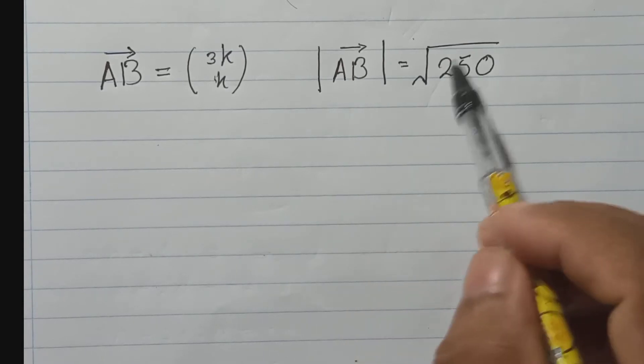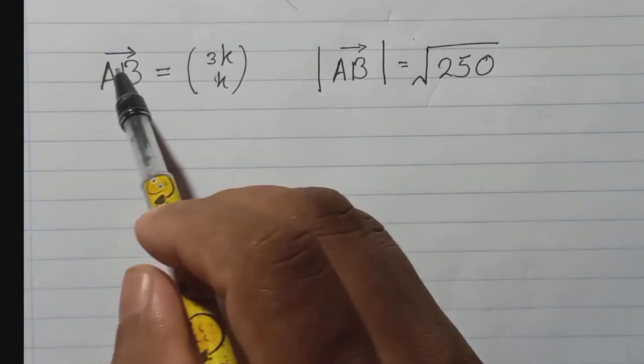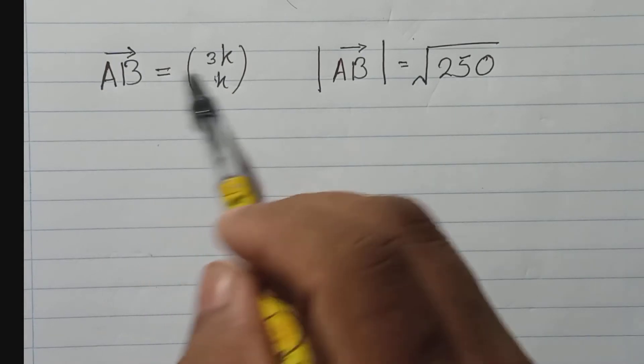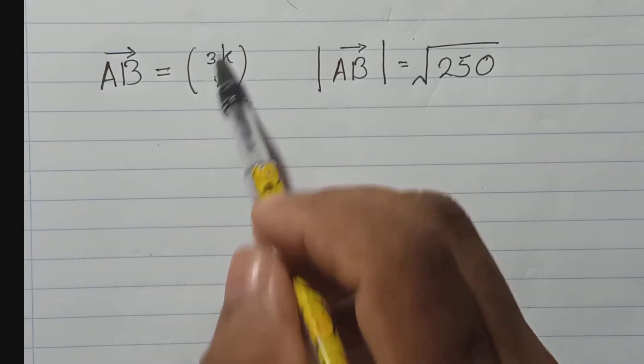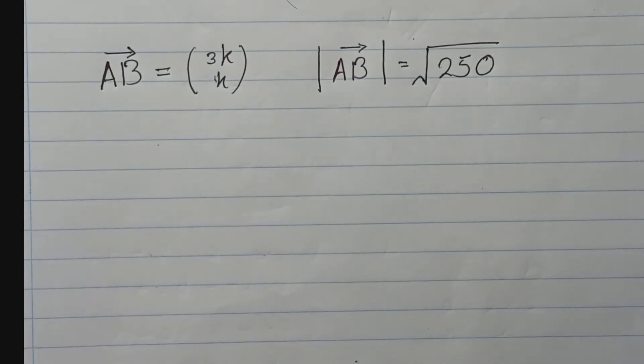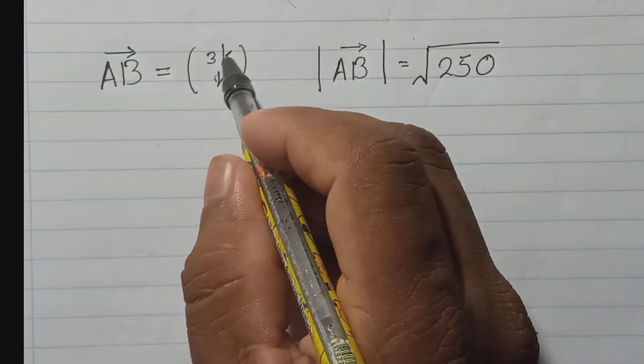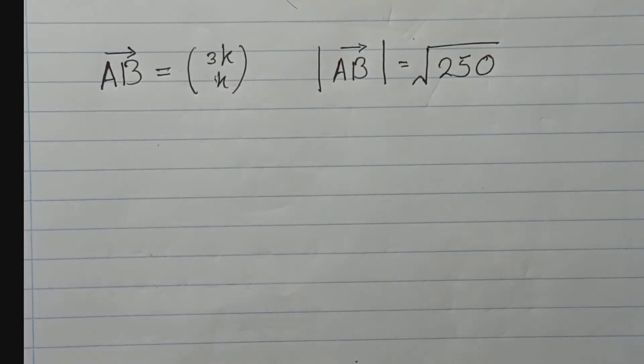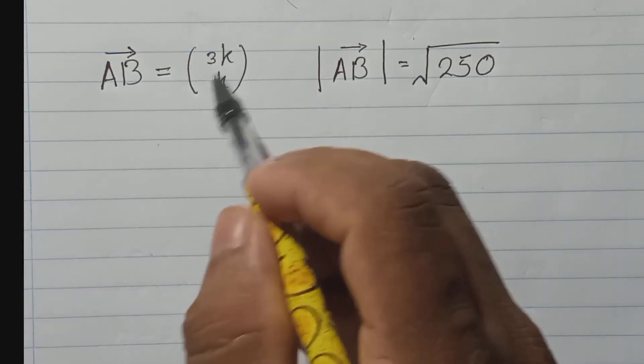When we have a vector like this, a column vector, how to find magnitude? You need to remember this formula, but this one is coming from Pythagoras theorem. This one square plus this one square and square root.